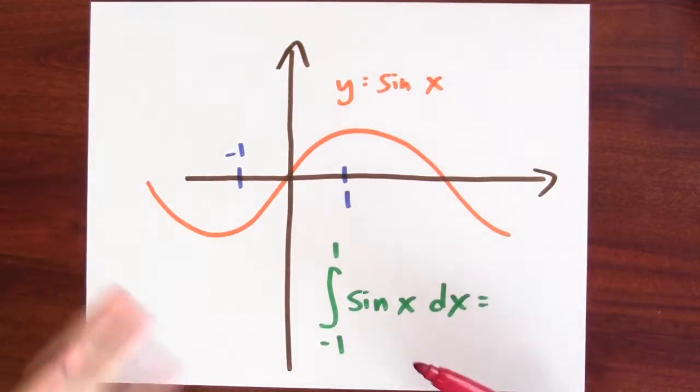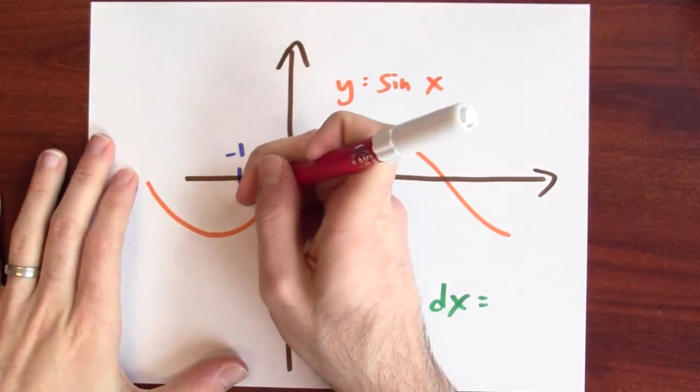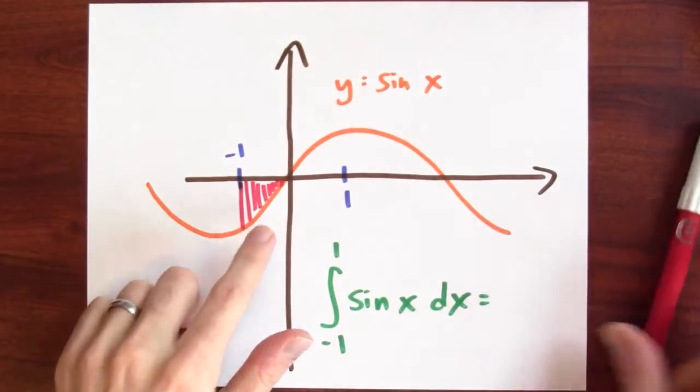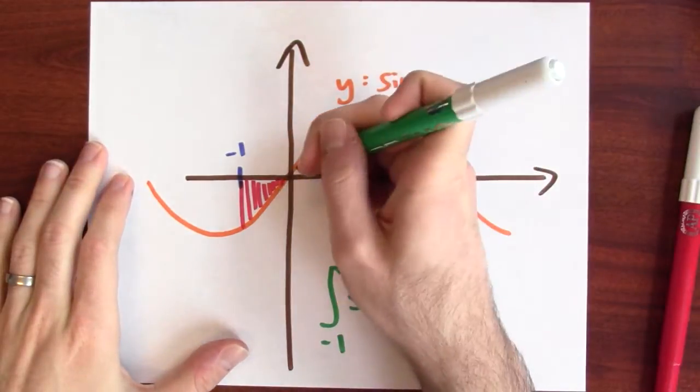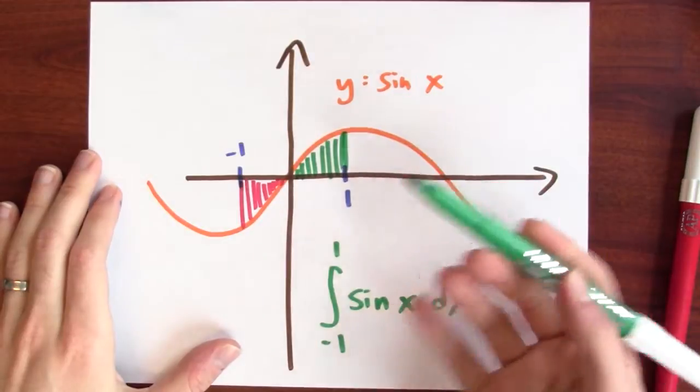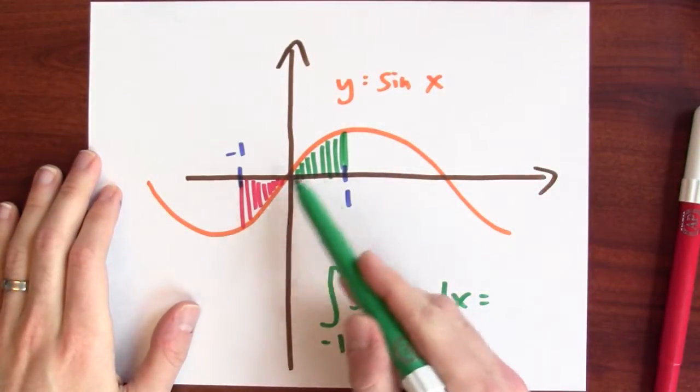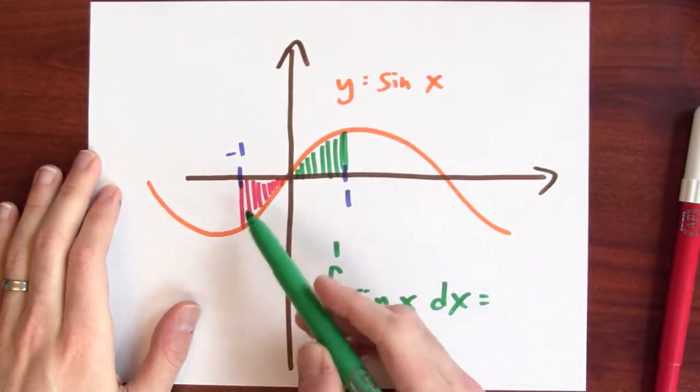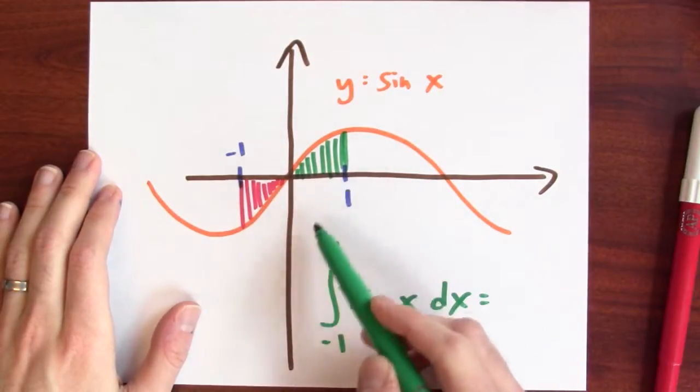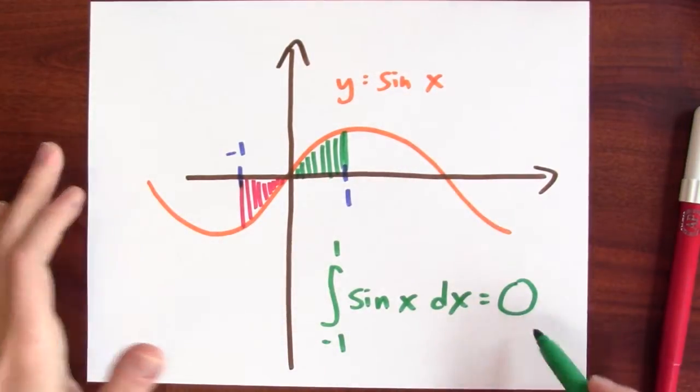Remember, the integral is at least morally calculating signed area. So it's going to be calculating this area here, but with a negative sign, and it's going to be calculating this area here as actual area with a positive sign. And these two areas are equal, but the integral's going to count this area with negative sign and this area with a positive sign. So the integral should cancel and the answer should be 0.